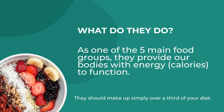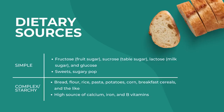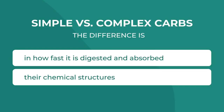We need them in our balanced diet. There are various dietary sources. The simple carbohydrates are fructose (fruit sugar), sucrose (table sugar), lactose (milk sugar), and glucose, as well as sweets and sugary foods. The complex carbohydrates are starches — that is bread, flour, rice, pasta, potatoes, corn, and breakfast cereals. They are also a high source of calcium, iron, and B12.